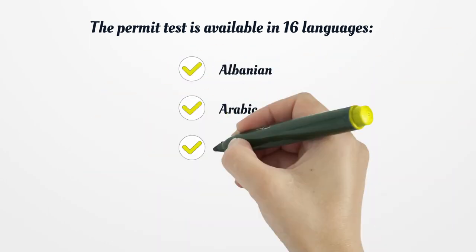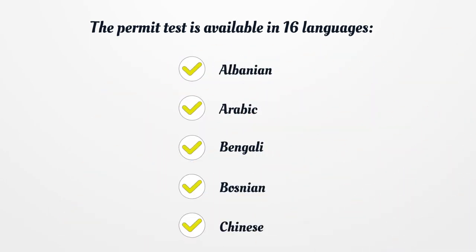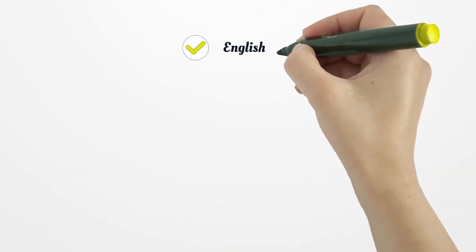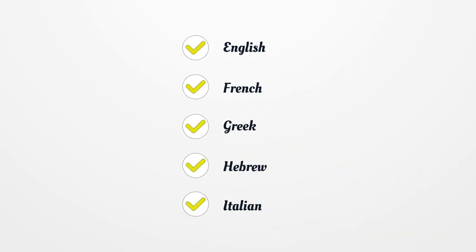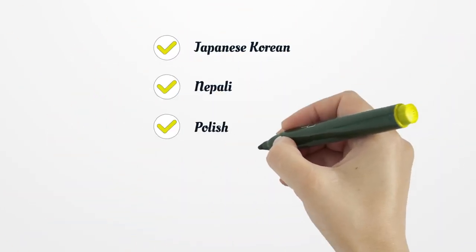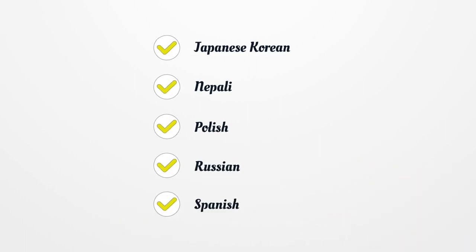The permit test is available in 16 languages: Albanian, Arabic, Bengali, Bosnian, Chinese, English, French, Greek, Hebrew, Italian, Japanese, Korean, Nepali, Polish, Russian, and Spanish.